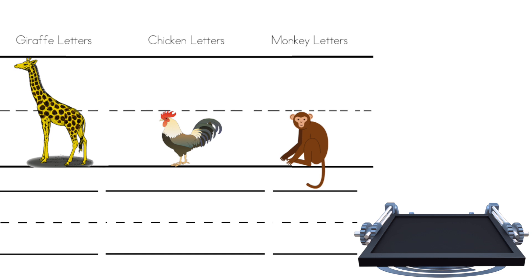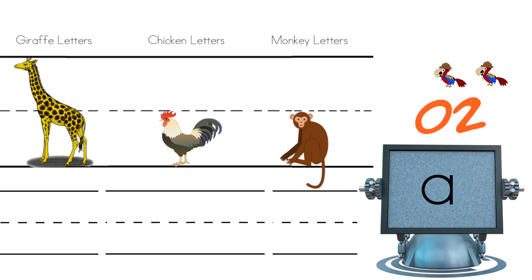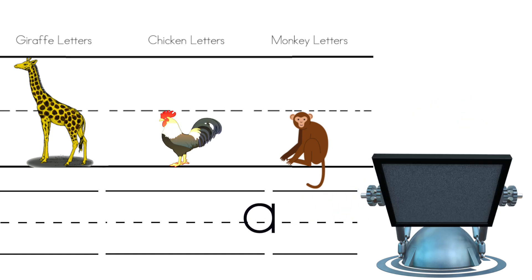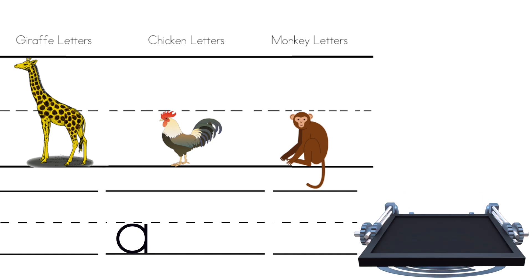Here's the first game. Are you ready to play? Here we go. Which animal letter is the letter A? A is a chicken letter. Did you see that before me? Great job.